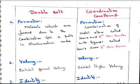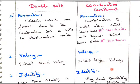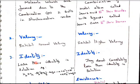Now valency: it exhibits normal valency and here the coordination compounds exhibit a higher valency and identity. It loses the identity because when you add any water to the double salt it completely ionized.